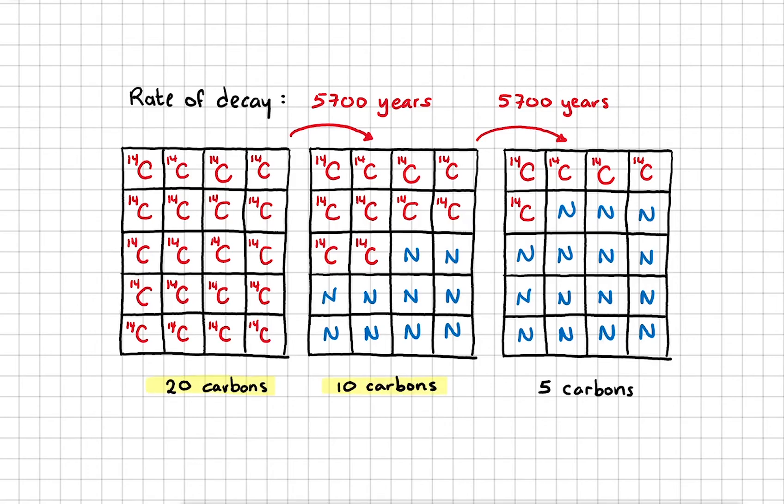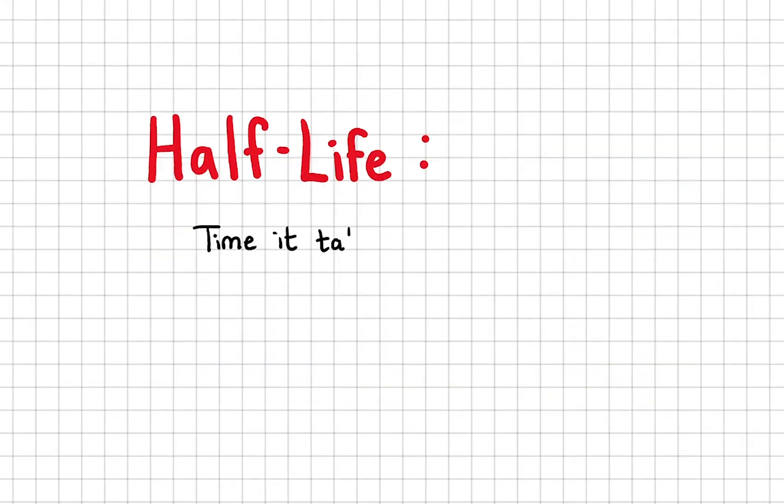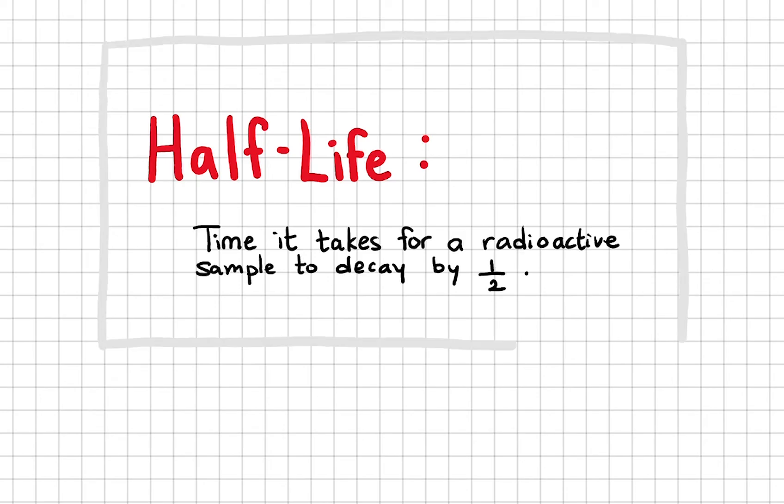Do you see a pattern here? Every 5,700 years, the sample halves in the number of carbon atoms. The amount of time for the radioactive sample to decay by half is known as the half-life. In the case of carbon-14, the half-life is 5,700 years.